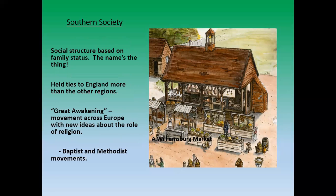In Southern society, your family's status and how much land your family owned determined your place — it was very much like how it was back in England. The Great Awakening was basically a revamping of religious beliefs. Religion here became strongly tied to the Baptists and Methodists, and those really came about strongly during the Great Awakening.